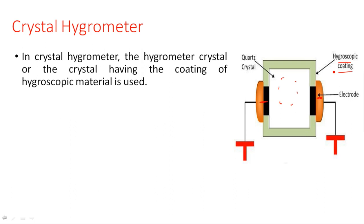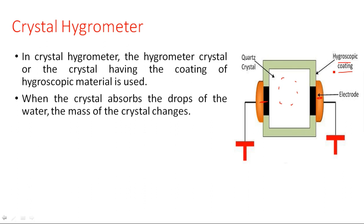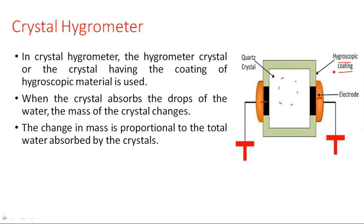In the crystal hygrometer, the crystal has a coating of hygroscopic material. When the crystal absorbs drops of water, the mass of the crystal changes. It absorbs water molecules from the humidity in the measured environment, changing its capacitance properties. The change in mass is proportional to the total water absorbed by the crystal.